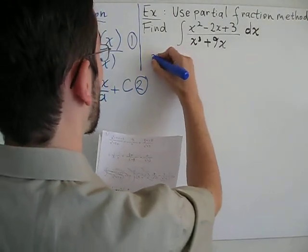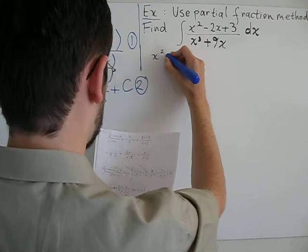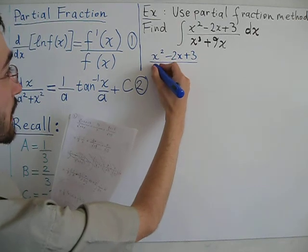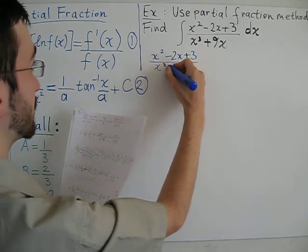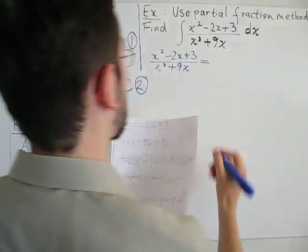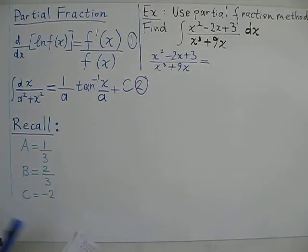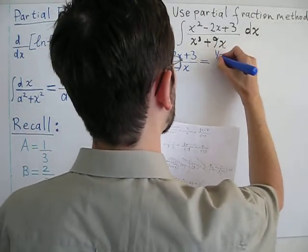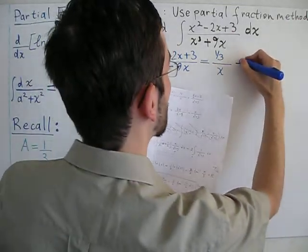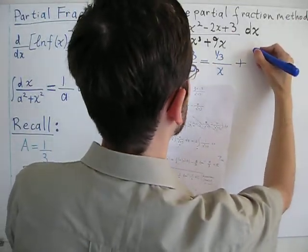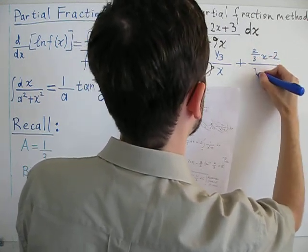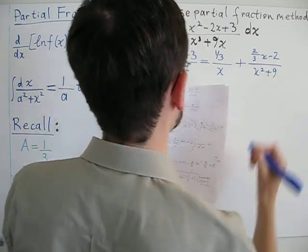So, starting from the original integrand that we have, x squared minus 2x plus 3 divided by x cubed plus 9x, we can now substitute for a, b, and c into the partial fraction expansion. We just end up with 1/3 over x plus 2/3 x minus 2 divided by x squared plus 9.